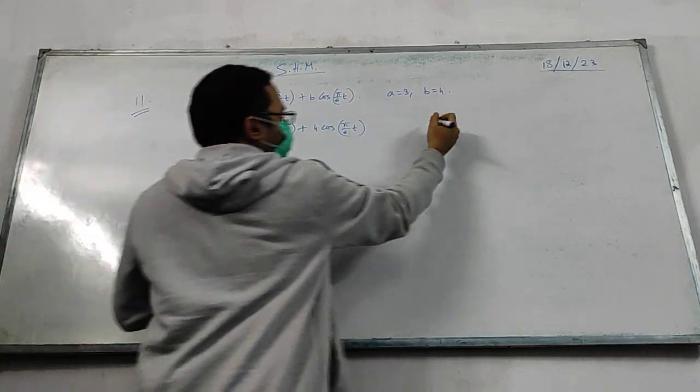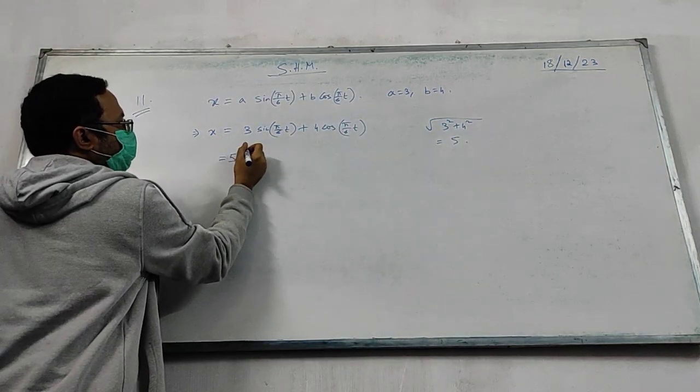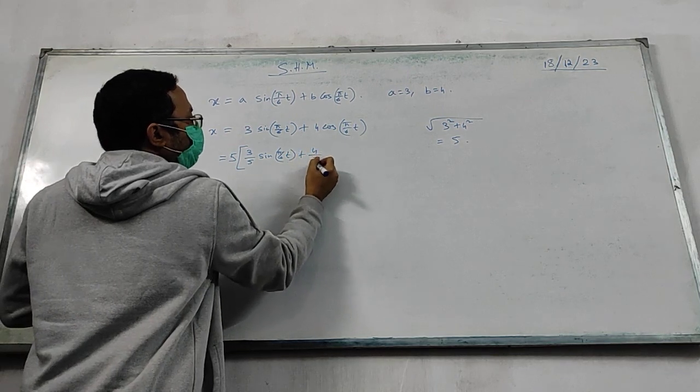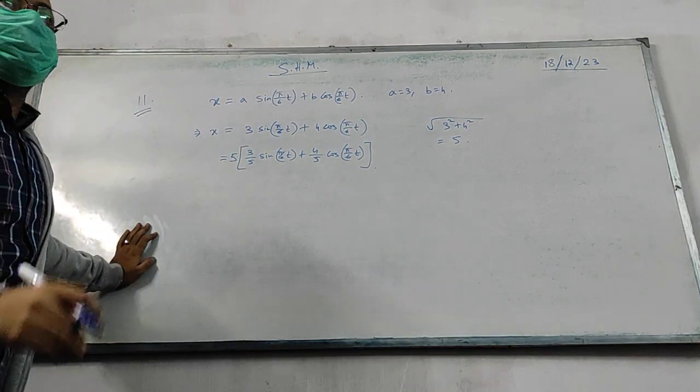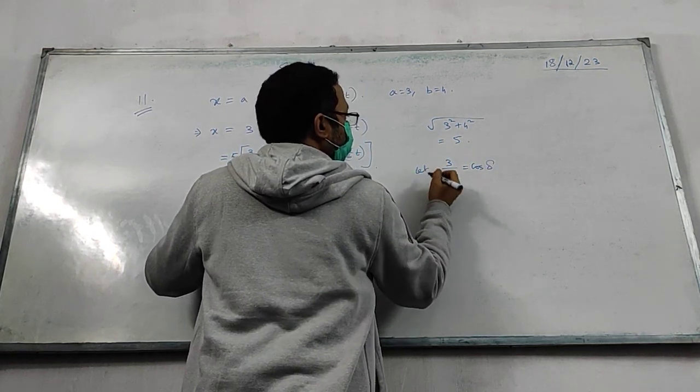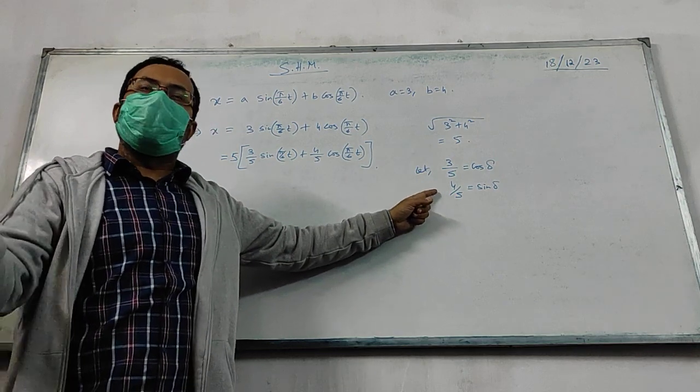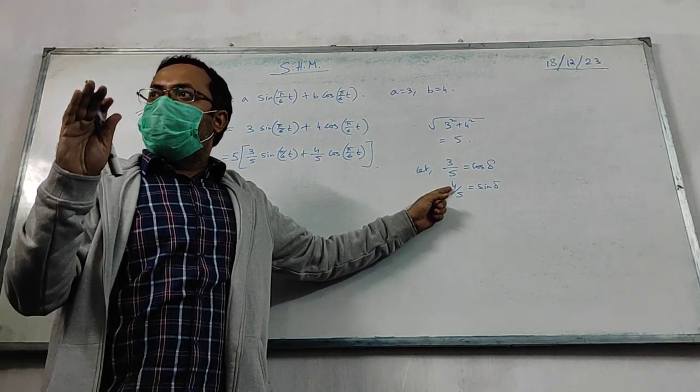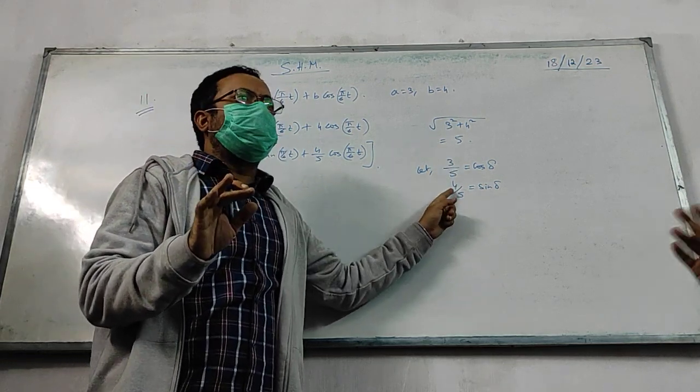3 sine pi by 6t plus 4 cos pi by 6t. And now what am I doing? Root over of 3 square plus 4 square, that is 5. We divide by 5. 5 into 3 by 5 sin pi by 6t plus 4 by 5 cos pi by 6t. So we can write 3 by 5 as cos delta and 4 by 5 as sin delta. See, if you square them and add them up, you will get 1. Sine square theta plus cos square theta is 1. So can I take this assumption?